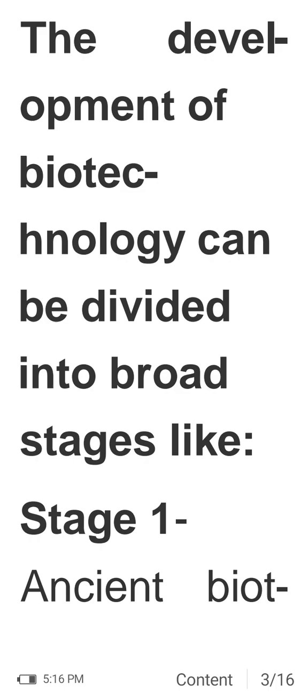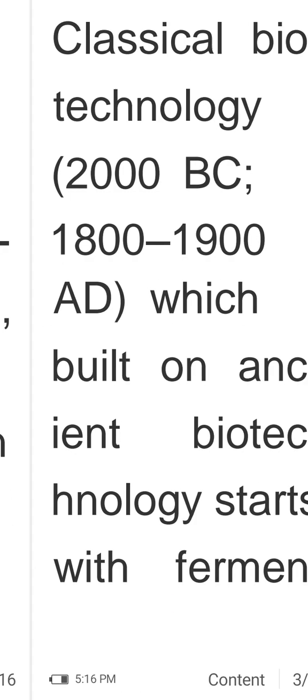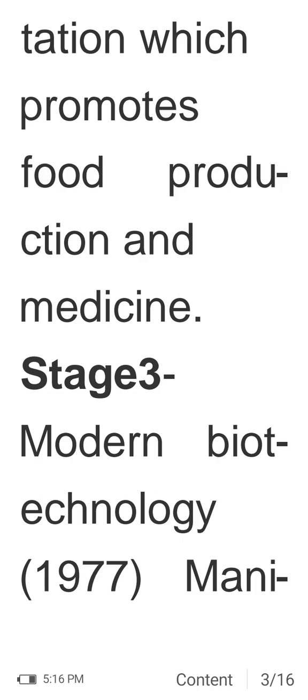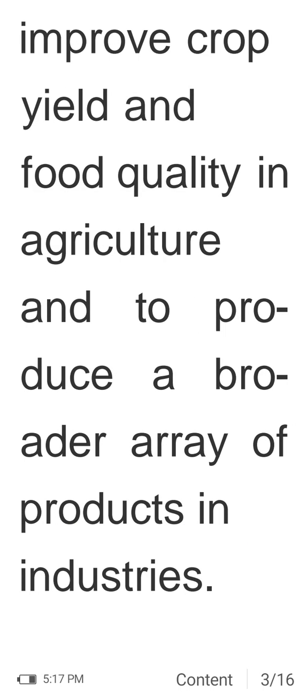The development of biotechnology can be divided into broad stages. Stage 1 — Ancient biotechnology (8000–4000 BC): early history relating to food, shelter, and domestication of animals. Stage 2 — Classical biotechnology (1800–1900 AD): builds on ancient biotechnology, starting with fermentation to promote food production and medicine. Stage 3 — Modern biotechnology (1977 onwards): manipulates genetic information through genetic engineering to improve crop yield, food quality, and industrial products.